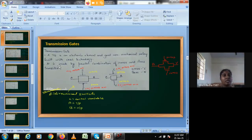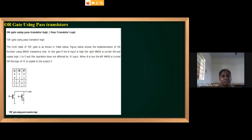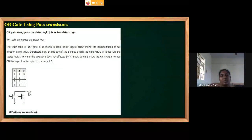Now we will go with OR gate design using pass transistors. We take two nMOS transistors. The first nMOS source terminal is input A, the second nMOS source terminal is logic one. The first nMOS gate is B-bar, the second nMOS gate is B, and we join both drain terminals. The output will be the OR operation, giving us A plus B.